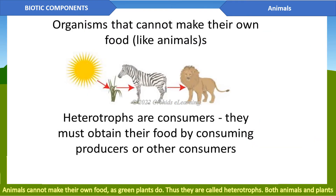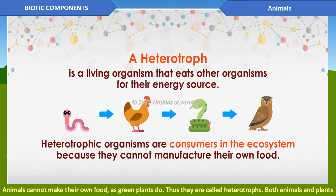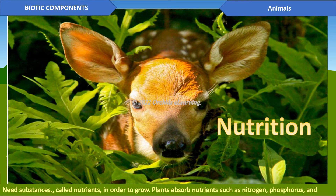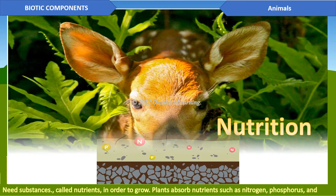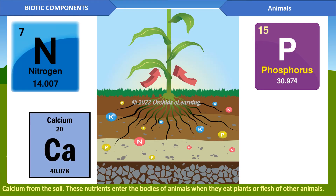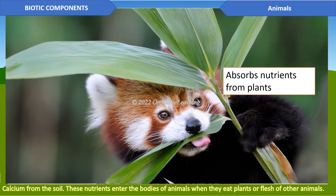Animals cannot make their own food as green plants do; thus they are called heterotrophs. Both animals and plants need substances called nutrients in order to grow. Plants absorb nutrients such as nitrogen, phosphorus, and calcium from the soil. These nutrients enter the bodies of animals when they eat plants or the flesh of other animals.